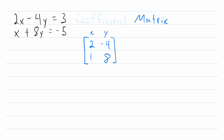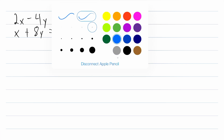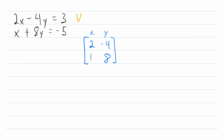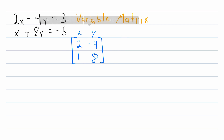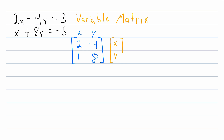These coefficients are being multiplied by variables, so it should come as no surprise that the next thing we need is a variable matrix. The variable matrix stores the variables from our system. It has one column and then one row for each variable. Whichever variable was represented by the first column in the coefficient matrix should go in the first row of the variable matrix — so that is x in this case — and then whatever variable is represented in the second column of the coefficient matrix should go in the second row of the variable matrix.